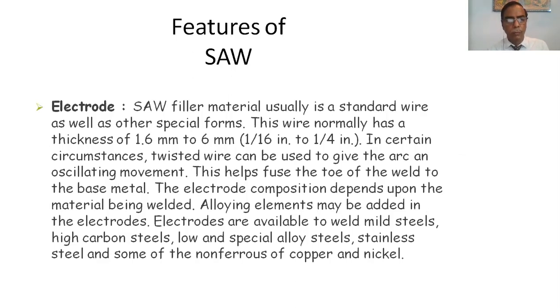Features of SAW tools. SAW filler material usually is a standard wire as well as other specific special forms. This wire normally has a thickness of 1.6 millimeter to 6 millimeter. In certain circumstances twisted wire can be used to give the arc an oscillating movement. This helps fuse the toe of the weld to the base metal. The electrode composition depends upon the material being welded. Alloying elements may be added in electrodes. Electrodes are available to weld mild steels, high carbon steels, low and special alloy steels, stainless steels, and some of the non-ferrous copper and nickel alloys.